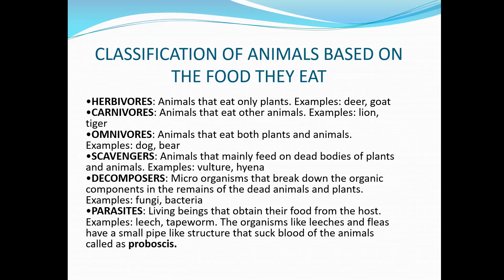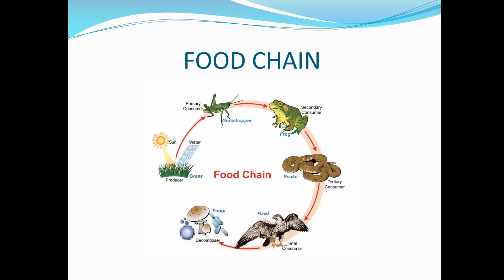Organisms that live on or inside the bodies of other organisms and obtain food from them are called parasites. The organism that provides food and shelter to the parasite is called the host, and parasites usually harm the host. Organisms like leeches and fleas have a small pipe-like structure called a proboscis that sucks the blood of animals. All living organisms depend on each other for food either directly or indirectly.